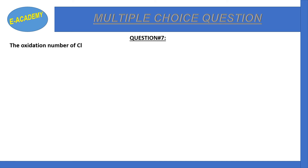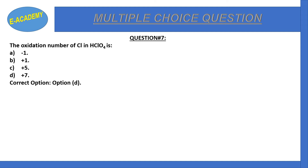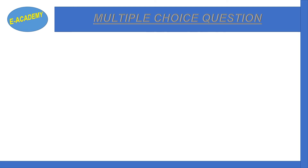Question number 7: The oxidation number of Cl in HClO4 is −1, +1, +5, or +7? The correct option is D: +7. To verify: H is +1, Cl is x, and O is −2 with 4 oxygens. Setting up: (+1) + x + 4×(−2) = 0, solving gives x = +7.